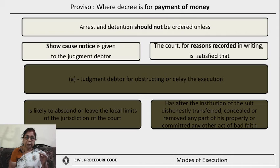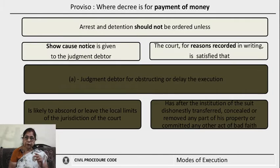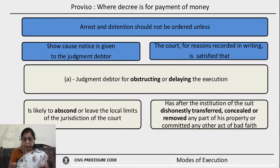There is a proviso relating to the mode of execution when the decree is for payment of money. When the decree is for payment of money, arrest and detention should not be ordered unless certain conditions are satisfied. First, there is a necessity to give notice to the judgment debtor to show cause why he should not be arrested or detained. Second, the court should be satisfied and must record in writing that the conditions exist — including that the judgment debtor is obstructing or delaying the execution of the decree.